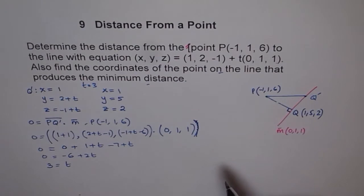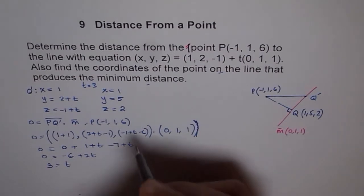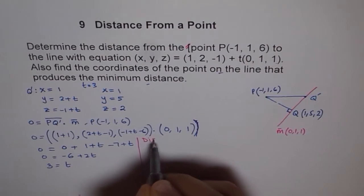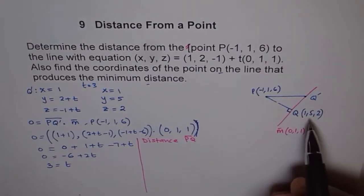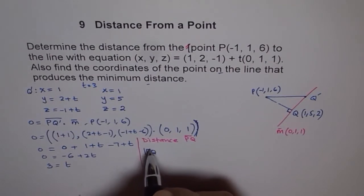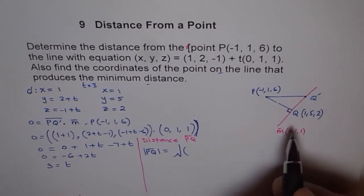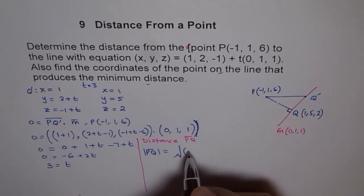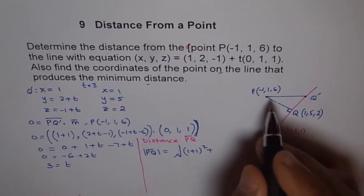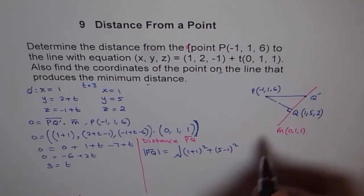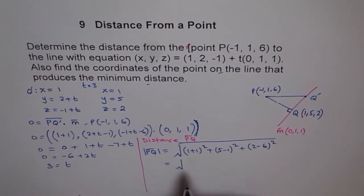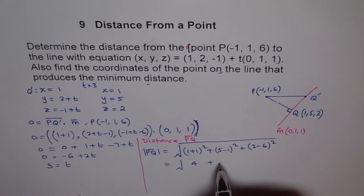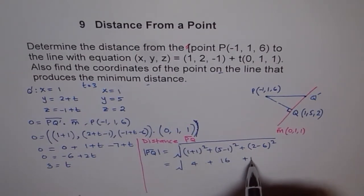Now let's find the distance from P to Q using the distance formula. The distance PQ equals the square root of (1 minus (minus 1)) squared plus (5 minus 1) squared plus (2 minus 6) squared, which is the square root of 2 squared plus 4 squared plus (minus 4) squared.